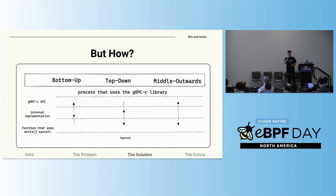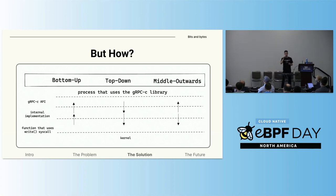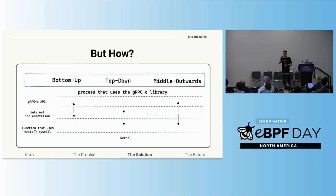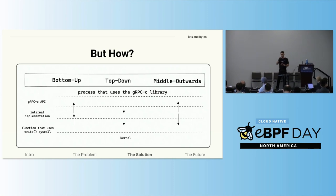But how can we even start to search for these functions in the hundreds of thousands of lines of code inside the gRPC C library? Well, we can search for them in three manners. The first is a bottom-up search, where we start by looking at the kernel system calls send and receive. We've established that the data we search for goes through there. And then we can ask ourselves: who uses these functions? The data must be there too. And we ask the same question again and again, working our way up through the flow of the data receiving and sending sequences.